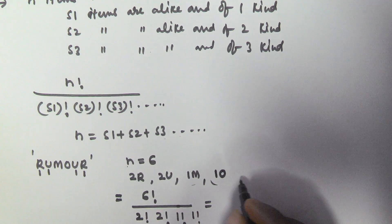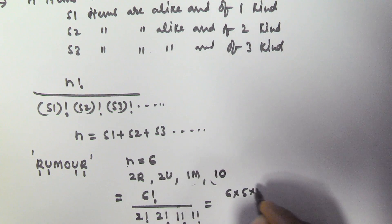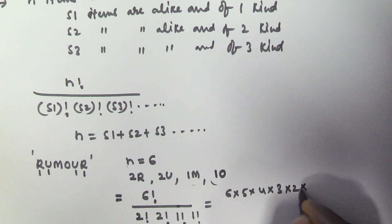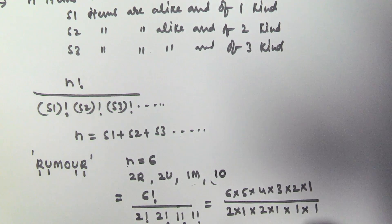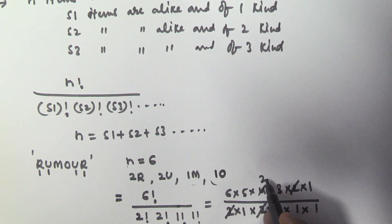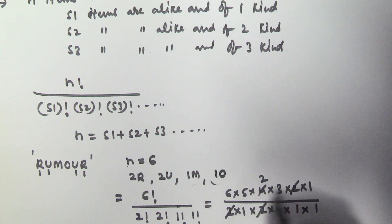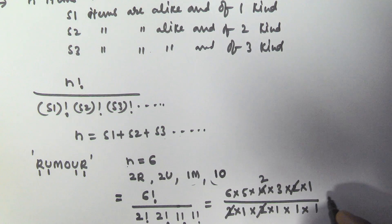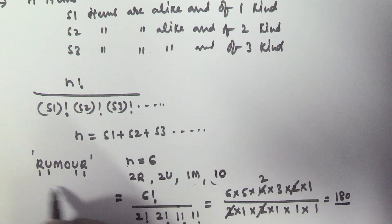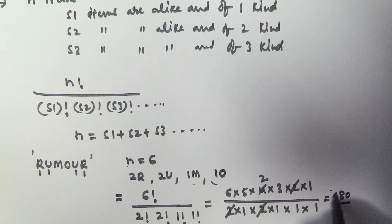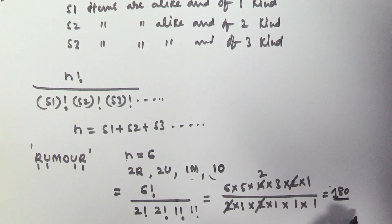So that is six factorial — six into five into four into three into two into one — divided by two factorial (two into one), times two factorial (two into one), times one factorial (one), times one factorial (one). The twos cancel, giving three twos as six, six fives are thirty, and thirty into six gives one hundred and eighty. So these letters can be arranged in one hundred and eighty ways.